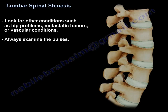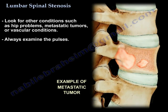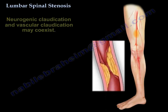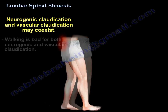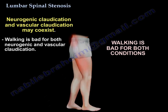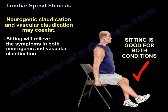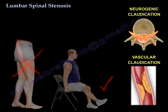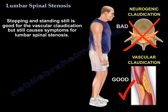Look for other conditions such as hip problems, metastatic tumors, or vascular causes. Always examine the pulses. Neurogenic claudication and vascular claudication can coexist. Walking is bad for both conditions. Sitting relieves the symptoms in both conditions. However, stopping and standing still is good for vascular claudication, but still causes symptoms for lumbar stenosis.